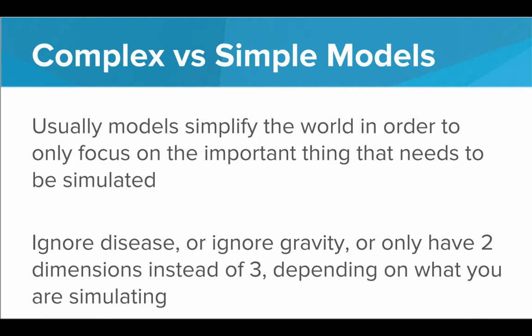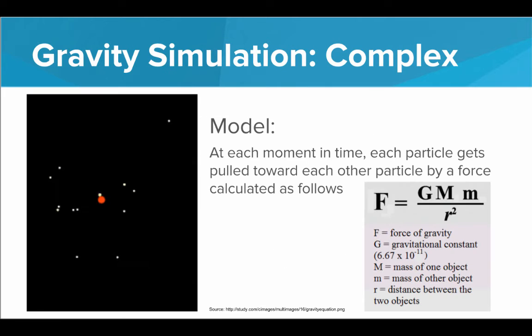Let's look at one more example of a complex versus simple simulation. Let's take gravity. In that first example we showed of a gravity simulator, this is a pretty complex model of gravity. How this is working is that at each moment in the simulation, every single particle is getting pulled towards every other particle by a force that is calculated using this equation. The force is equal to some gravitational constant times the mass of the first particle times the mass of the second particle divided by the distance between them squared. And it does that for every single particle in the simulation, for every single pair of particles. That's a lot of computation to calculate how these particles are getting pulled around.